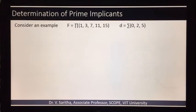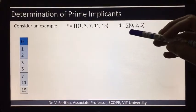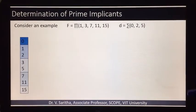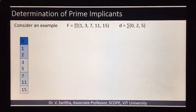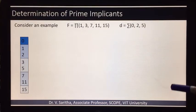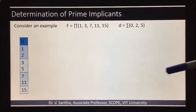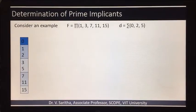Consider this example where pi terms are given and don't care cases are given. This could be sigma or pi, it doesn't matter, because don't care conditions will be represented as X. So here, including pi terms and don't care cases, we will group them according to the number of ones only.